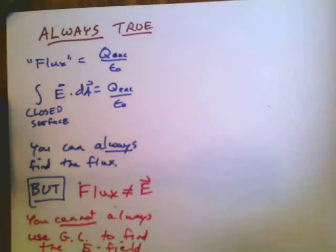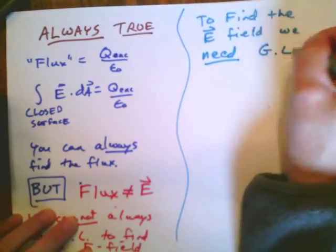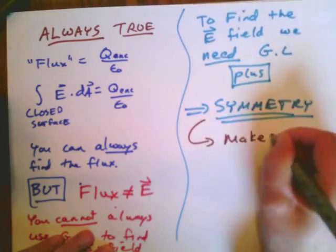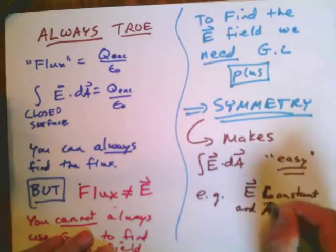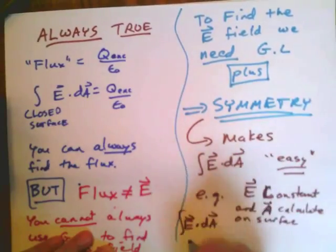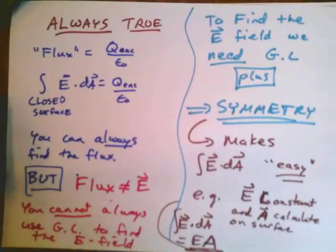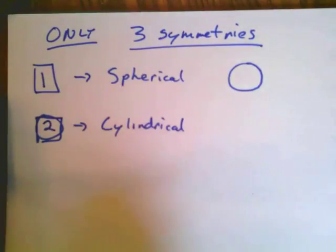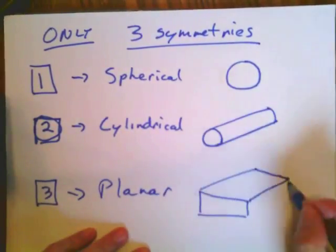To find the electric field, we need Gauss's law plus something else — that something else is symmetry. Symmetry makes the calculation of the surface integral easy; it makes it possible to pull E out. For example, if the electric field is constant and the area can be calculated on a simple surface, then E dot dA is just equal to the constant electric field times that area. There are only three useful symmetries: spherical, cylindrical, and planar.